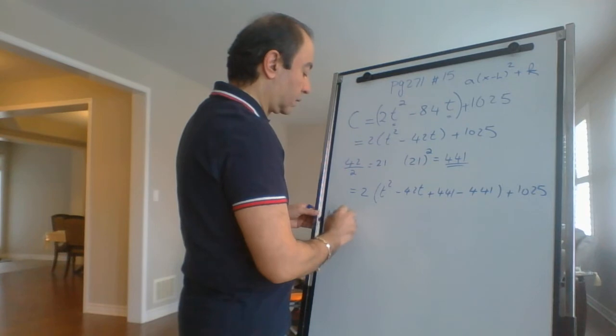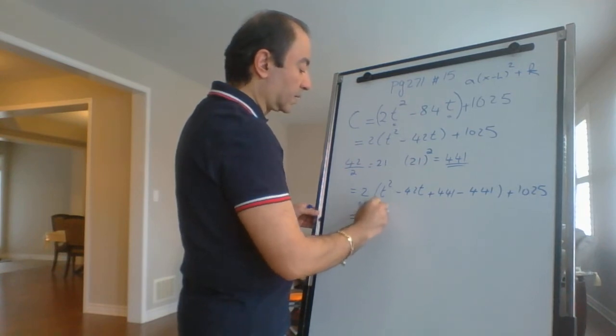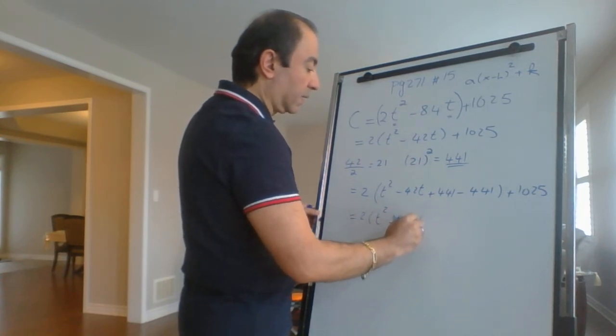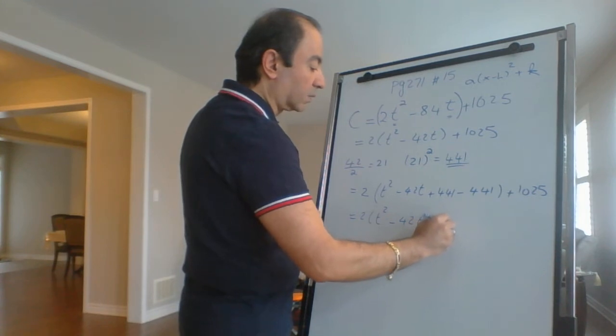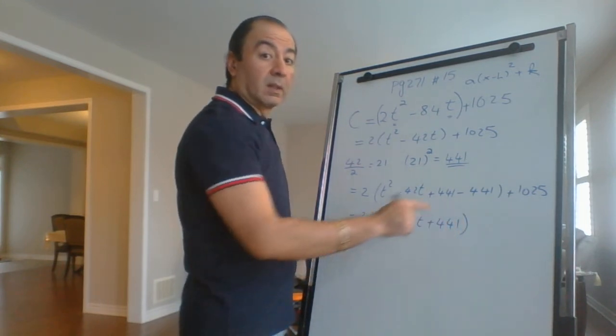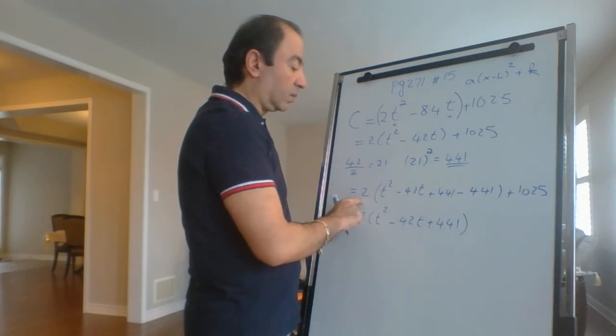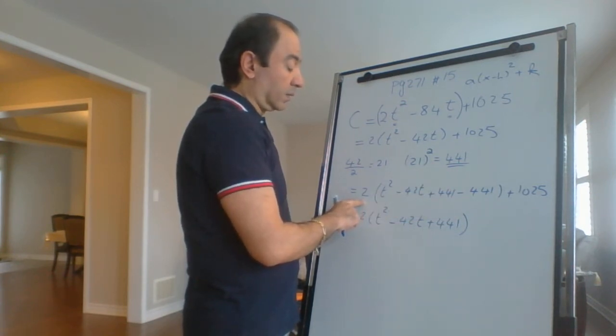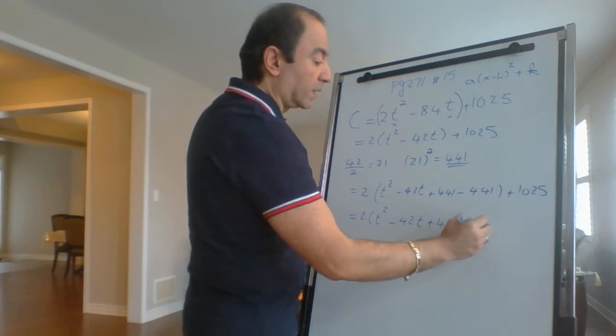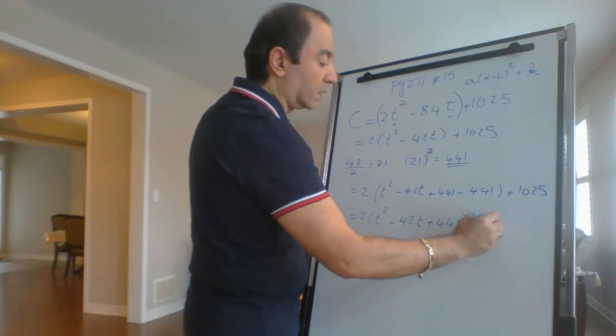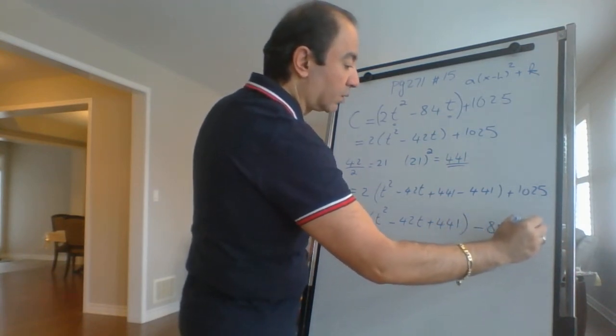Before we do that, we have to keep the positive value inside and take the negative value out. So I'm going to take this out, but it has to be multiplied by 2, so this will be -882 + 1025.